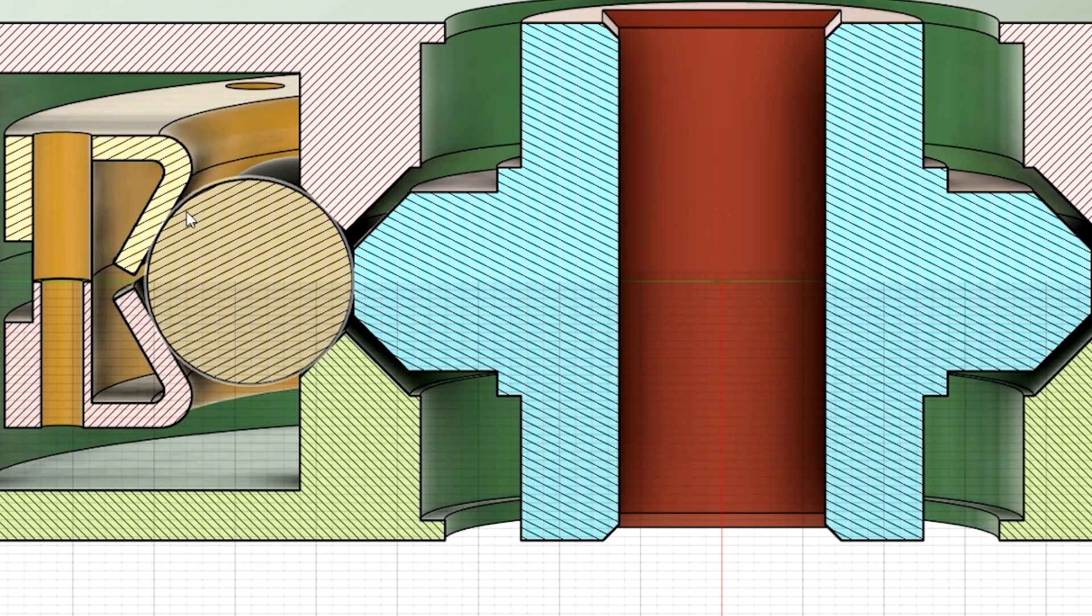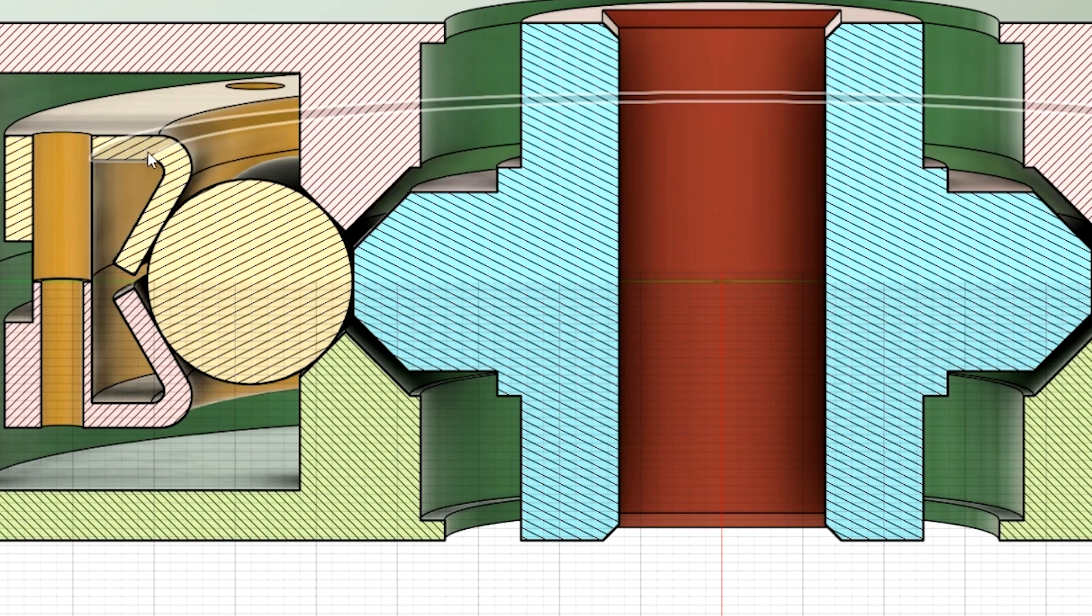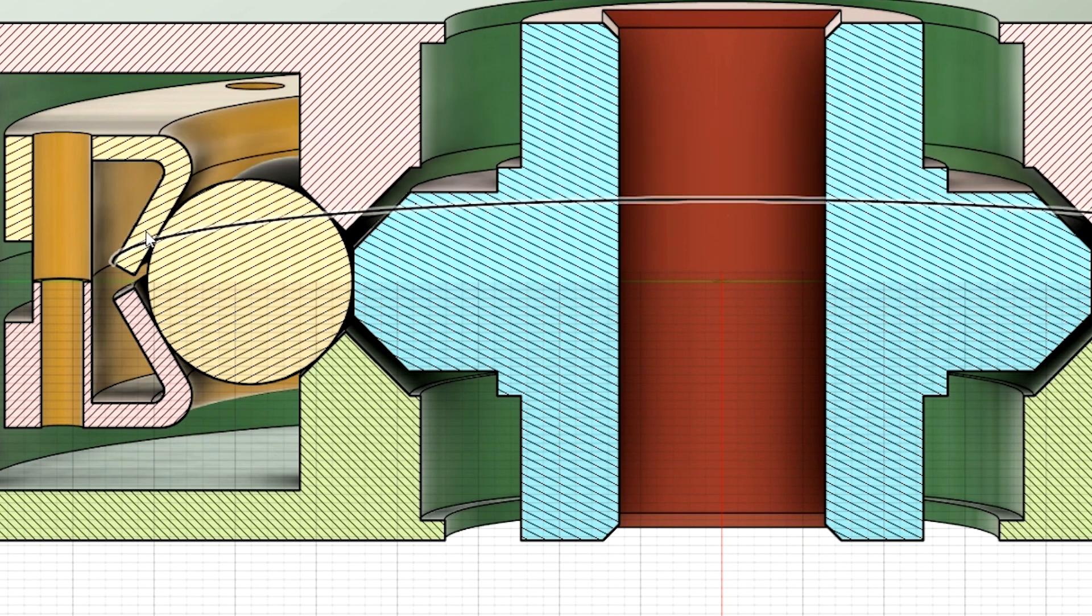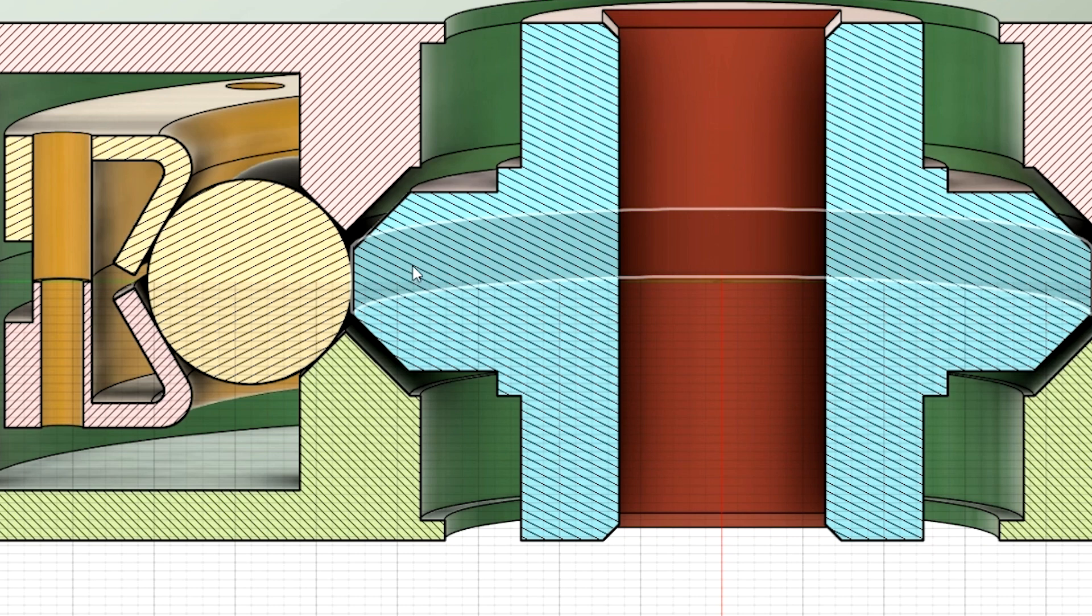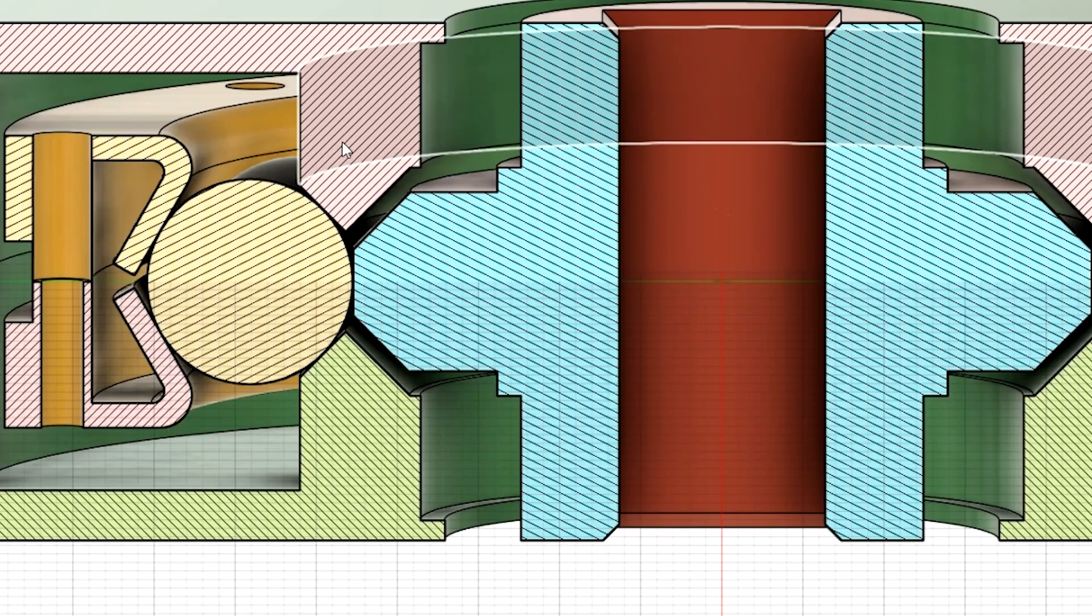They're on the outside, and they're engineered to have a little bit of spring to it. So they push the ball bearings in against the rotor. Not only are they pushed in against the rotor, they're also pushed in against this surface here on the stator, on the top part and the bottom part.